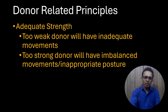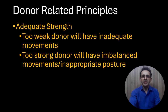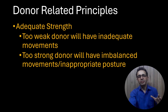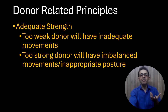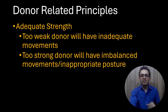Another donor-related principle is choosing an MTU with adequate strength. The donor tendon must be strong enough to achieve the desired movement, but it should not be too strong. A too-strong donor will produce imbalanced movements and inappropriate posture at rest, while a too-weak donor will result in inadequate movement.